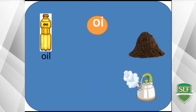Digraph oi — oi as in oil, oi as in soil, oi as in boil. Can you think of other examples with digraph oi? Good job!